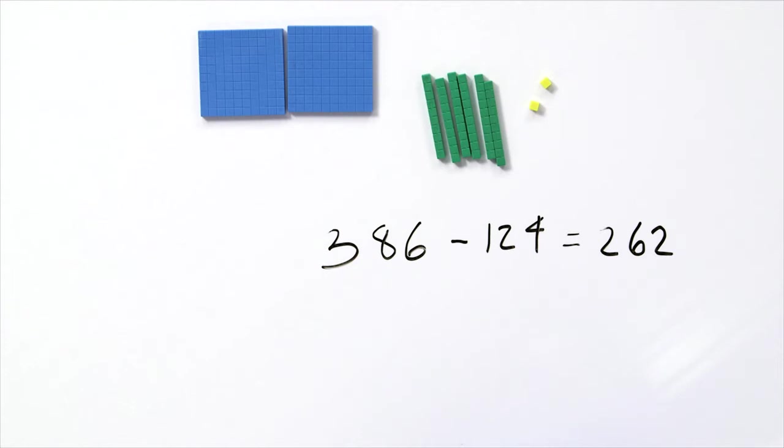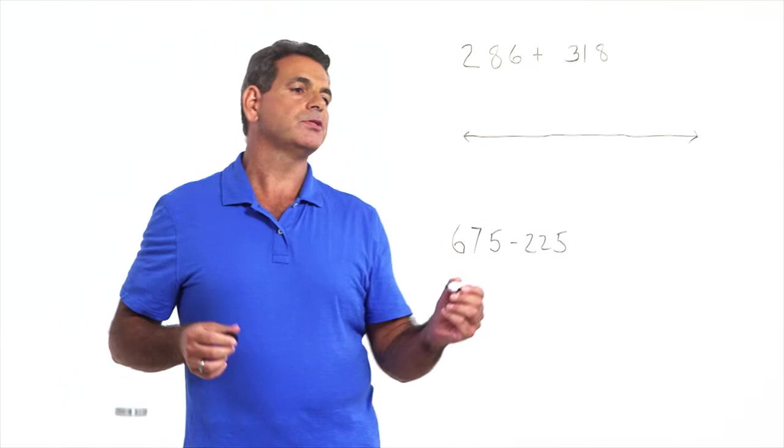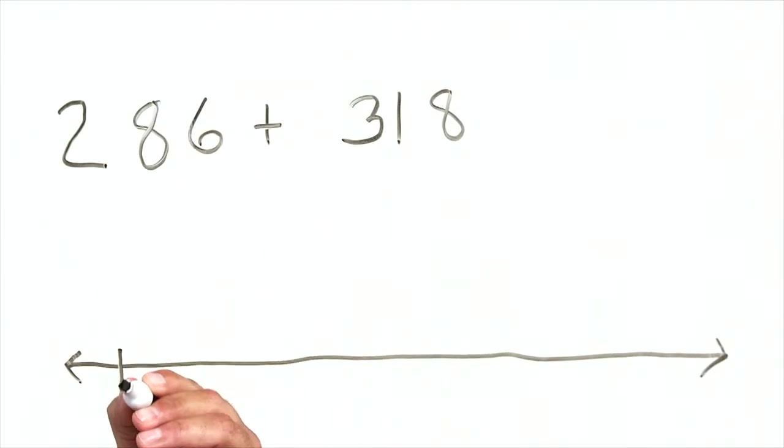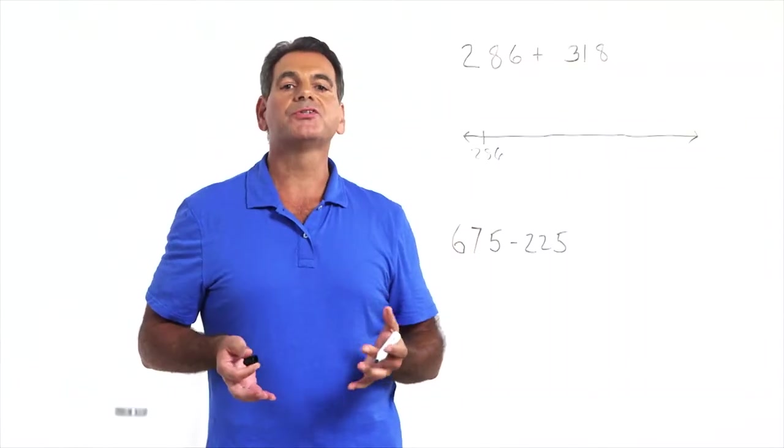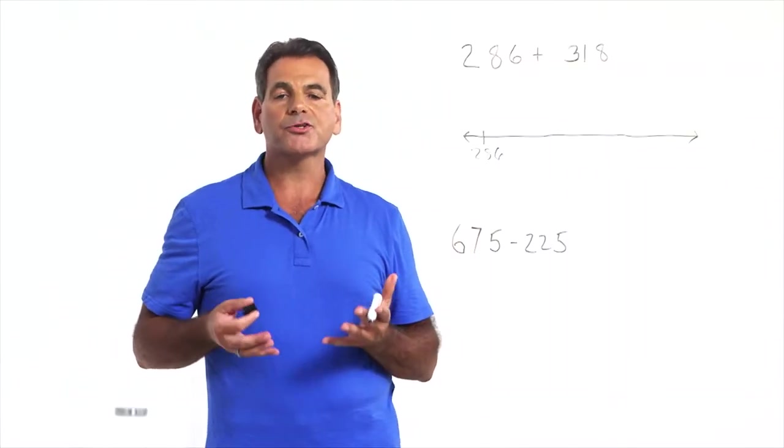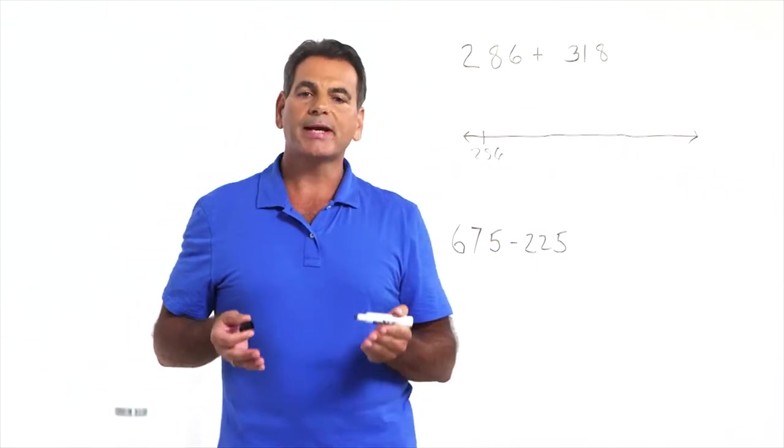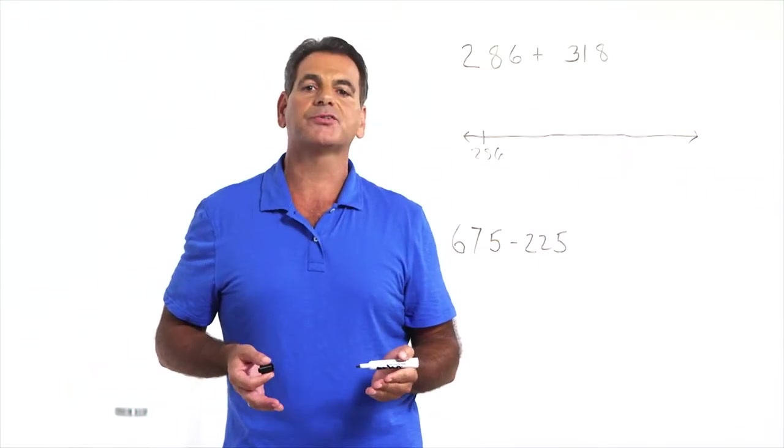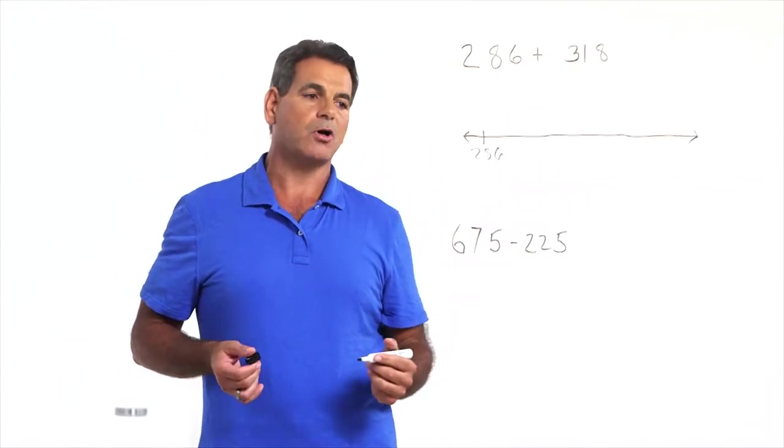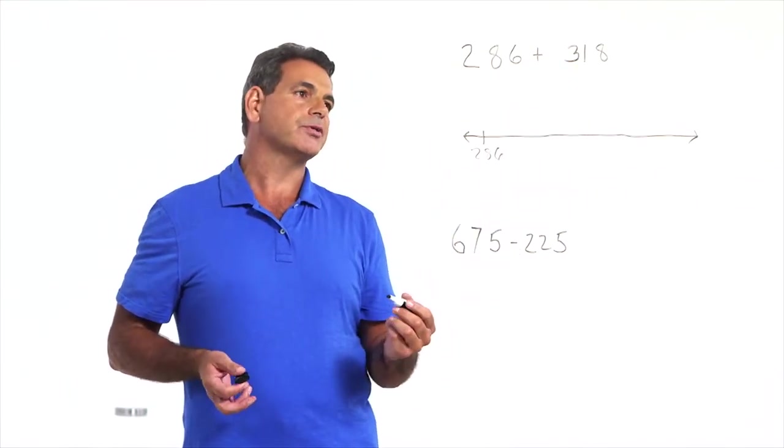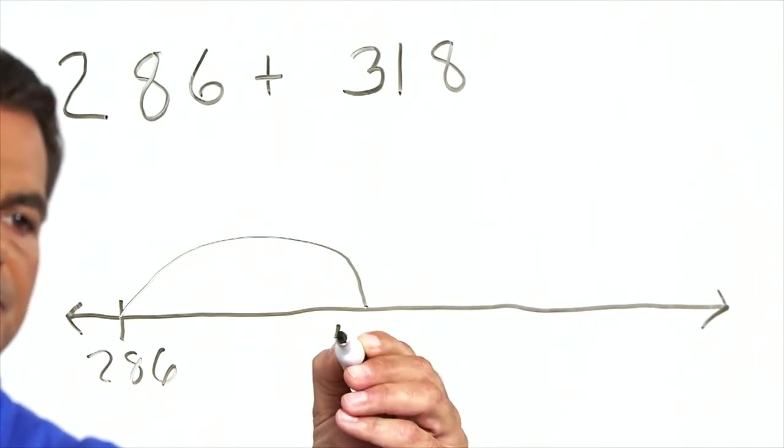Let's solve an addition problem using jumps on a number line. If you're using a number line and using jumps, you need a starting point. So the starting point is the first number, 286. Then you have to consider the jumps you're going to take. You want to try and make it one digit addition. So if we have 286, we can add 300 to it very easily because we're only adding in the hundreds place. The 86 comes along for the ride.